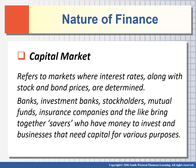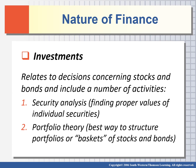Second is capital market, which refers to markets where interest rates, stock and bond prices are determined. Banks, investment banks, stockholders, mutual funds, insurance companies, and the like bring together savers who have money to invest and businesses that need capital. Third is investment, which relates to decisions concerning stocks and bonds and includes several activities: security analysis — finding proper values of individual securities — and portfolio theory, which is the best way to structure your portfolio or basket of stocks and bonds. Do not put all your eggs in one basket; spread across several, managing high-risk and low-risk investments.